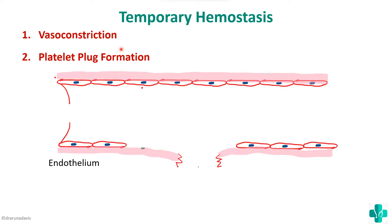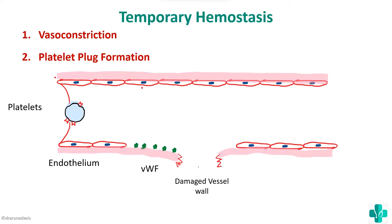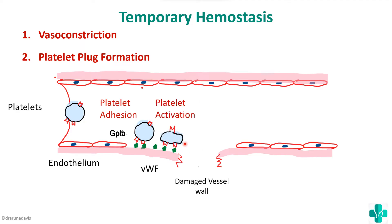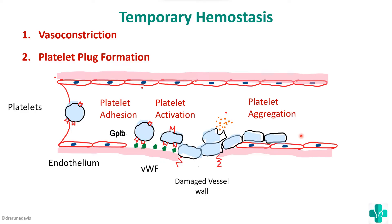Whenever there is a breach or the vessel wall is damaged, the von Willebrand factor will bind onto the subendothelial collagen. The platelet will then bind to the von Willebrand factor by means of the GP1B receptor. This will cause the platelet to be activated by a change in shape as well as a release of granules, causing more and more platelets to adhere to the damaged vessel wall — this is called platelet aggregation.